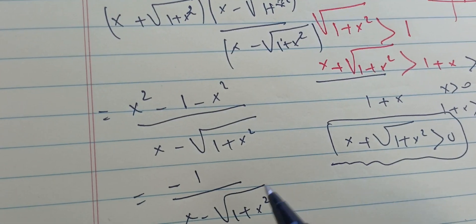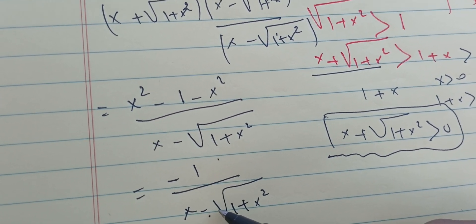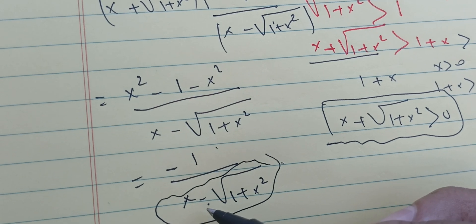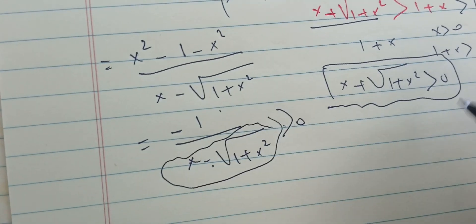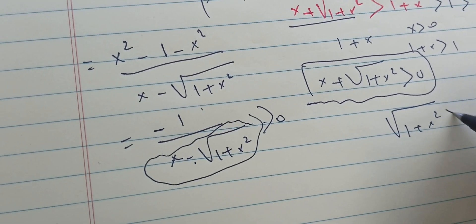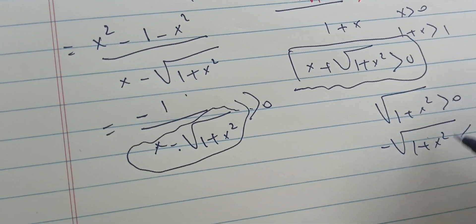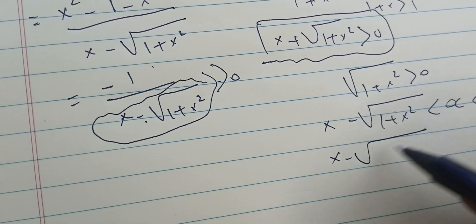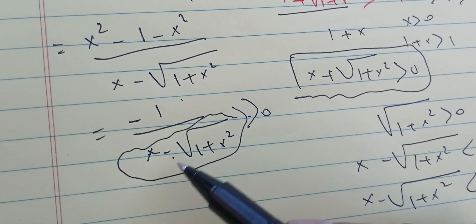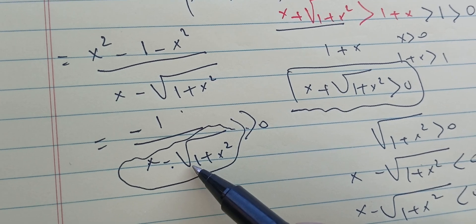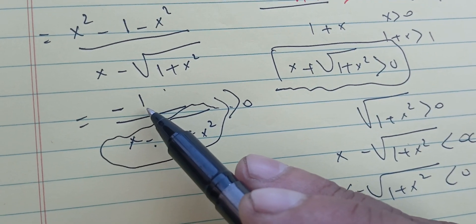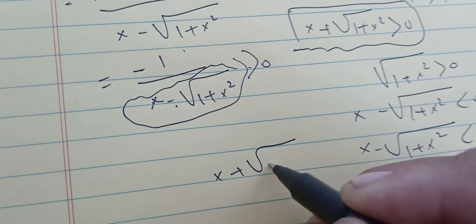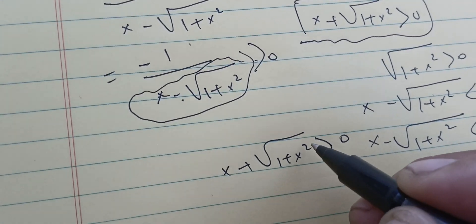So we have minus one over x minus the square root of one plus x squared. The square root of one plus x squared is always bigger than zero, so negative square root of one plus x squared is less than zero. Since x is also negative, x minus the square root of one plus x squared is less than zero. Therefore we have a negative quantity divided by a negative quantity, which is positive. This means x plus the square root of one plus x squared is bigger than zero.